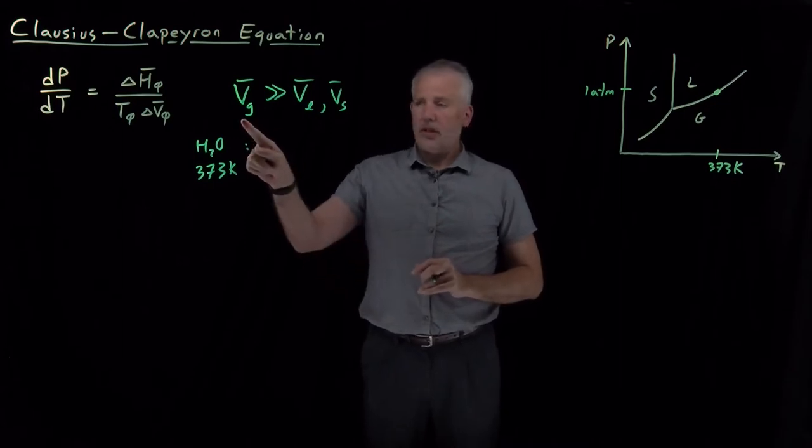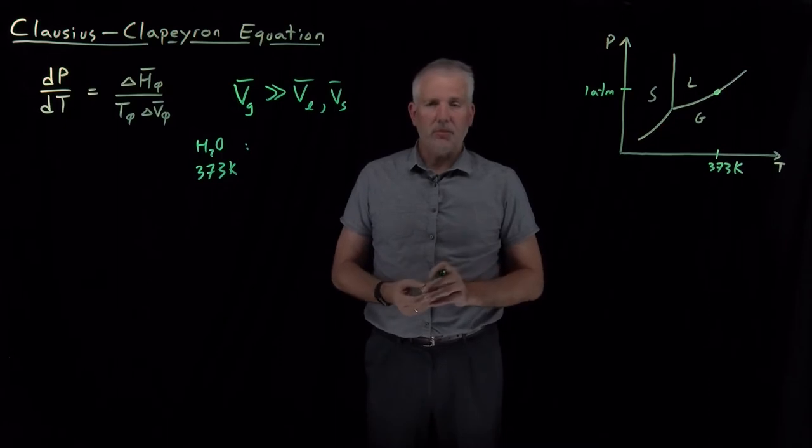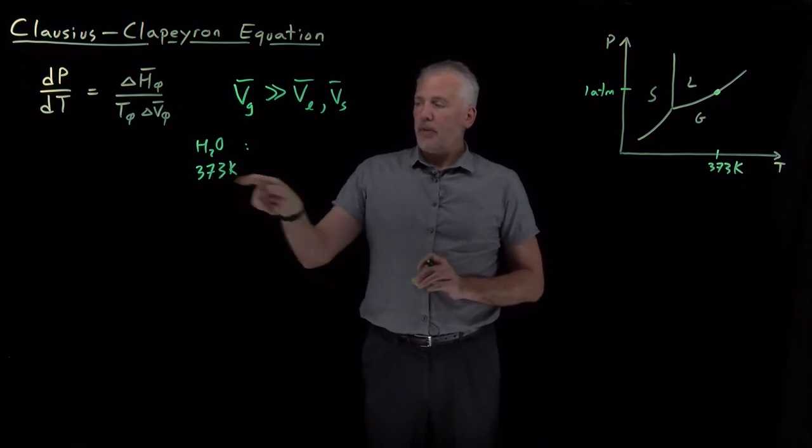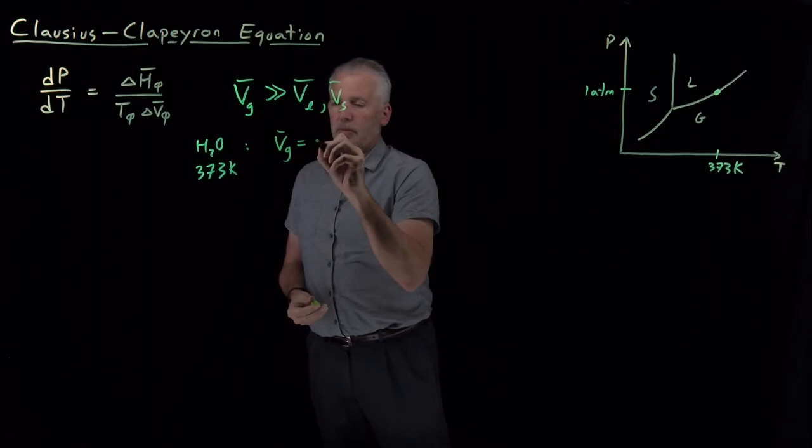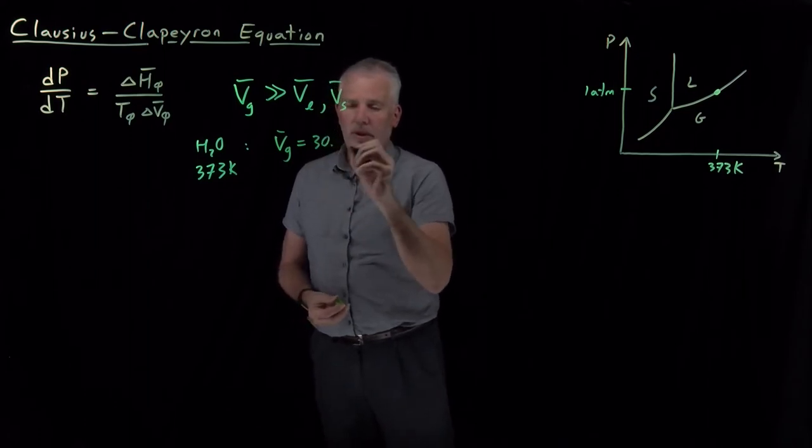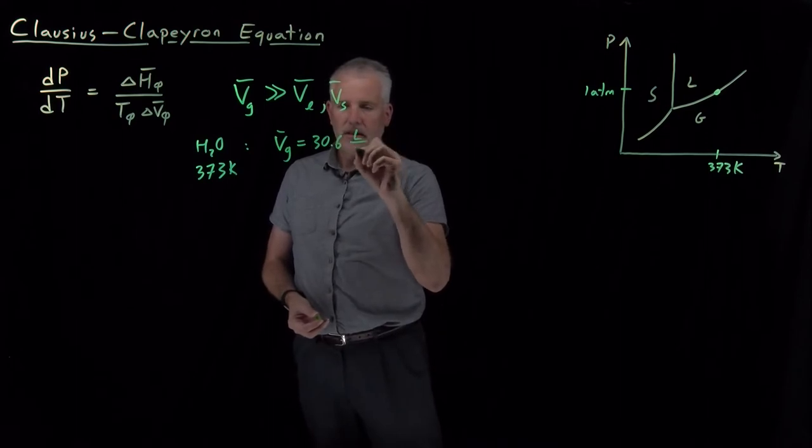The gas for any, if water behaves like an ideal gas, you might be able to tell me what the molar volume is at standard temperature and pressure. At 273 Kelvin, it's about 22.4 liters for every mole. Room temperature goes up to about 25 liters per mole. At 373 Kelvin, the molar volume is increased further to 30.6 liters per mole.